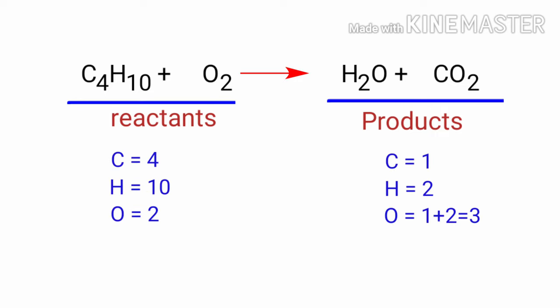If you look at this equation, the equation is not balanced. In the reactants side, there are 4 carbon atoms, 10 hydrogen atoms, and 2 oxygen atoms. In the products, there are 1 carbon atom, 2 hydrogen atoms, and 3 oxygen atoms. The number of atoms are not balanced on both sides.